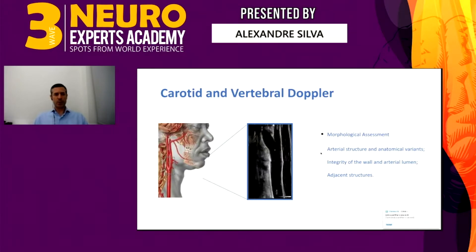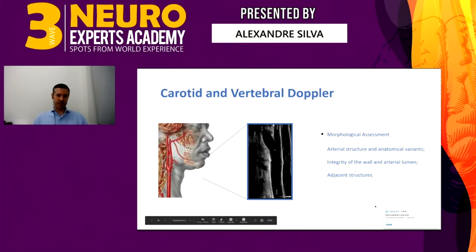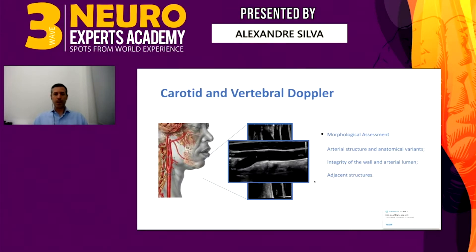When we talk about carotid and vertebral Doppler, we can have direct assessment of the morphology of the vessels, the arterial structure, and anatomic variants. We can look at the vessel wall and the arterial lumen, as well as adjacent structures that can impinge on the vessel. For hemodynamic parameters, we look at flow direction, signal sound, flow speeds, resistance index, spectral analysis, and we can also assess collaterality, showing the compensation phenomena when some vessels are occluded.